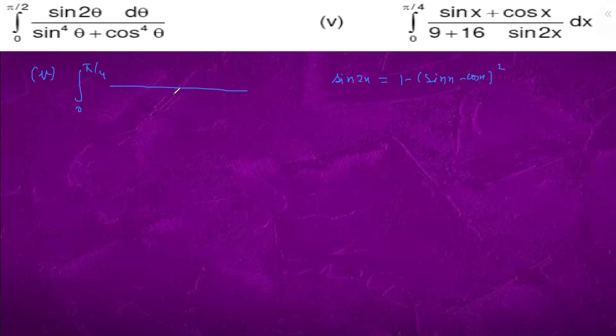So we have in the place of sin 2x we will have 1 minus sin x minus cos x which is 25 minus 16 sin x minus cos x whole square, this is sin x plus cos x dx. So we will take 16 also, this is t, this is dt.